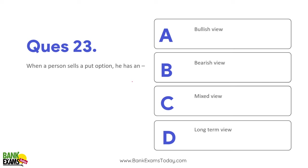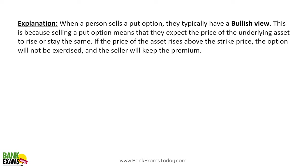Question 25: When a person sells a put option, he is bullish — he believes the market will go up. That is why he is selling the put option. If he were bearish, he would buy a put option or buy a call option instead.